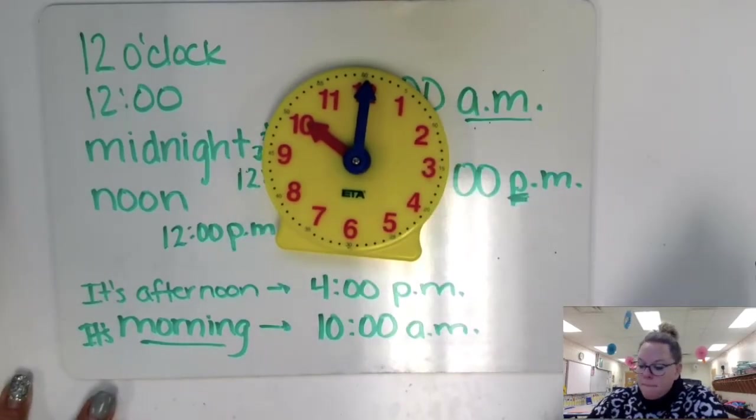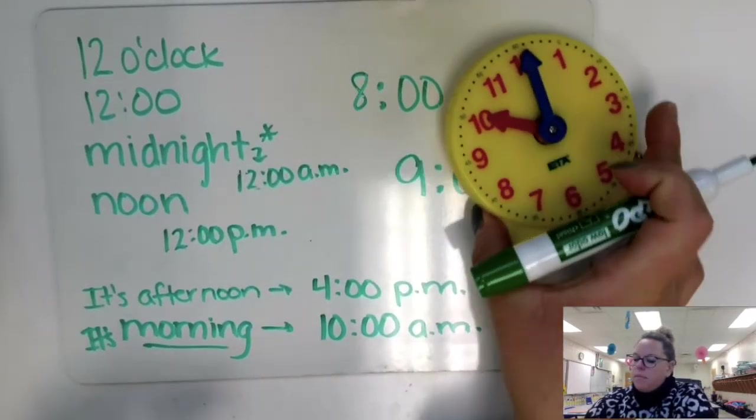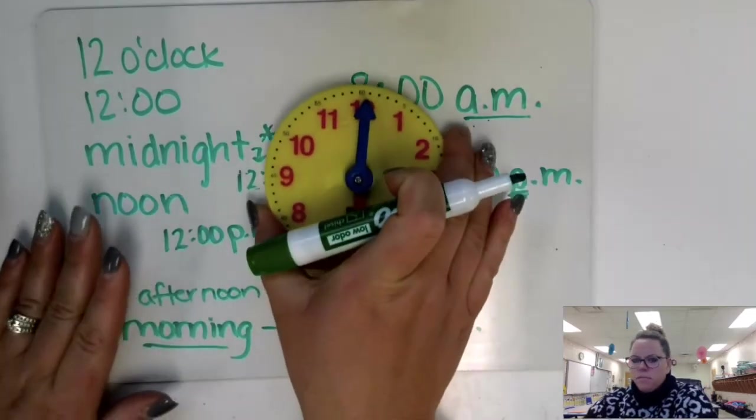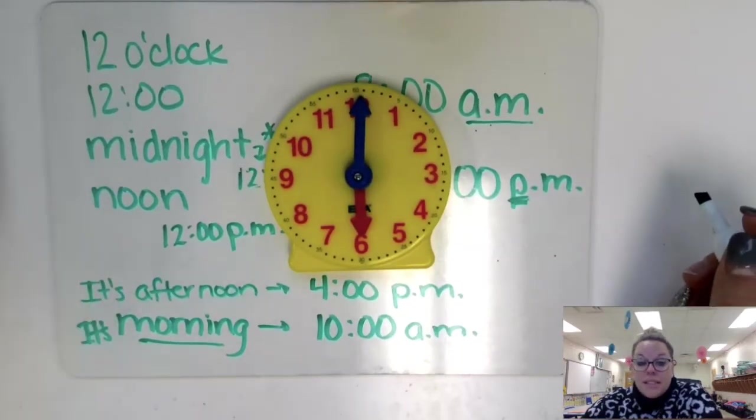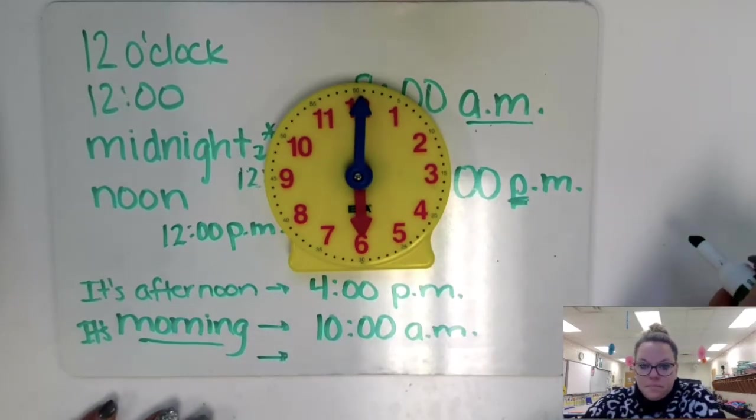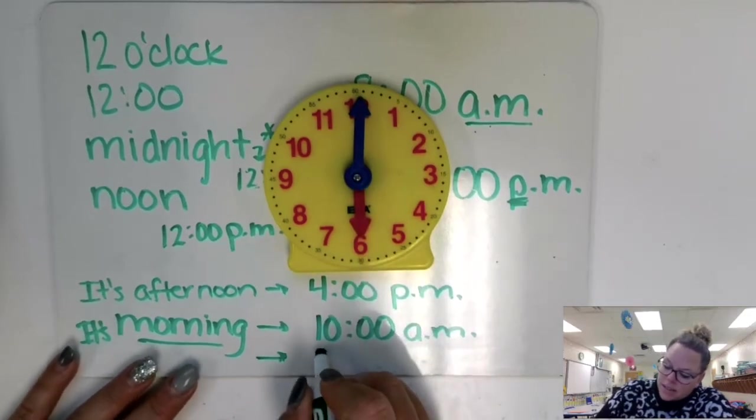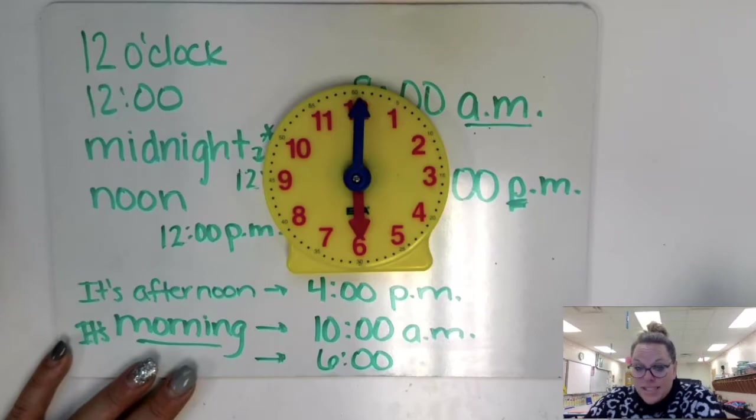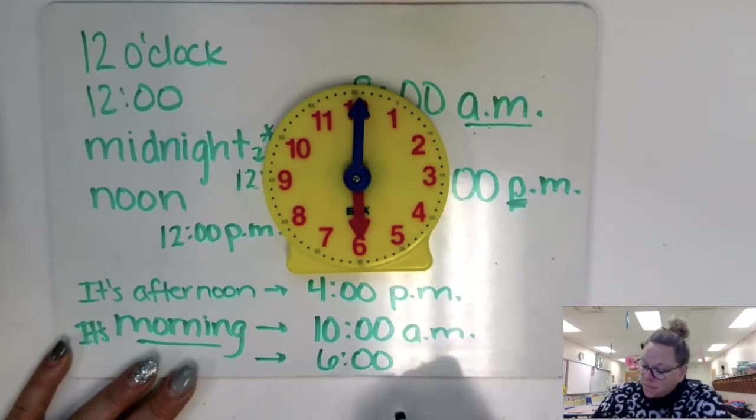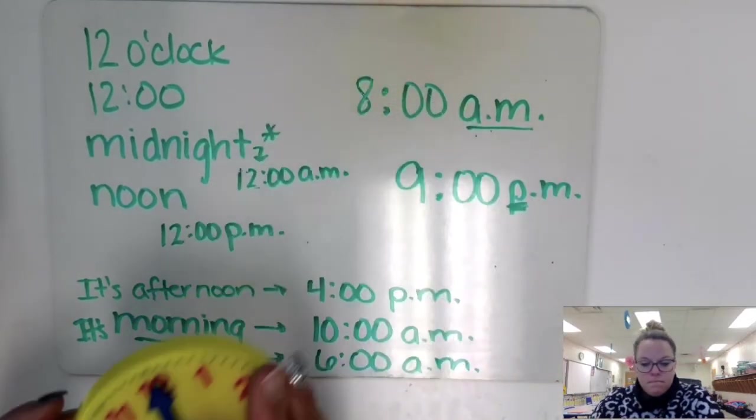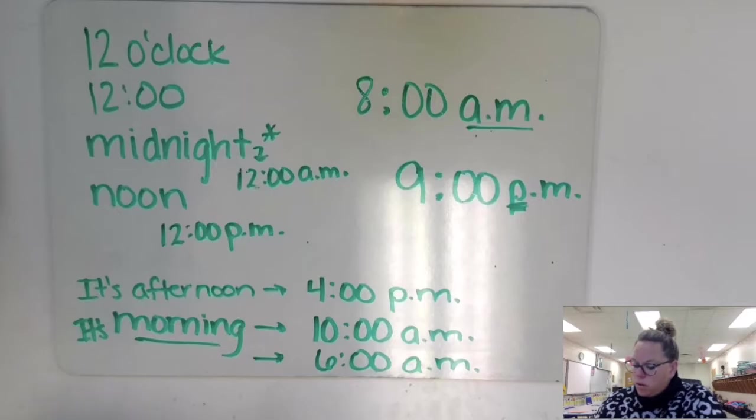It's morning. Now let's try this. It's morning. What time is it? Well, you know that it's six o'clock. And if it's morning, is that a.m. or p.m.? Right. A.m.